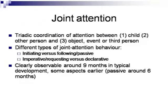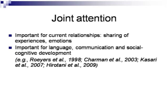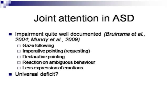Joint attention is clearly observable around nine months of age, and some aspects even earlier. Passive joint attention has been demonstrated around six months, or even earlier according to some authors. Like imitation, joint attention is extremely important for current relationships, for the sharing of experiences and emotions. It has also been shown to be important for the development of language, communication, and social cognitive development. The joint attention impairment in autism spectrum disorders is quite well documented, with reports of problems with gaze following, imperative pointing, declarative pointing, reaction to ambiguous behavior, and less expression of emotion during joint attention exchanges.